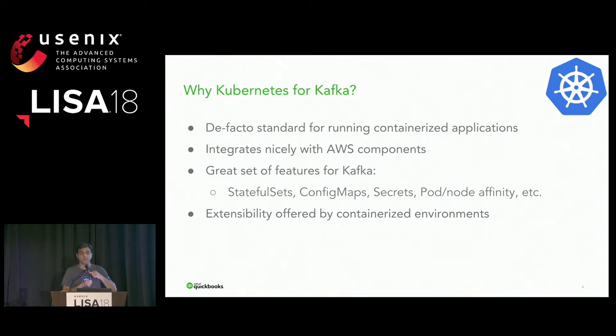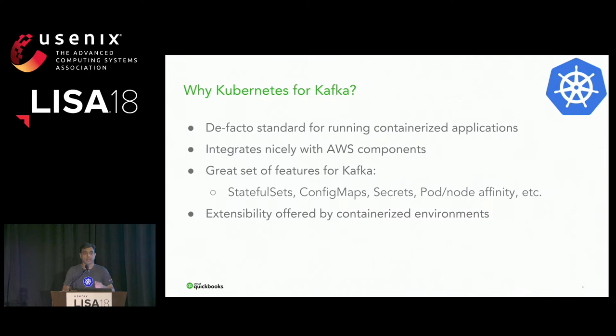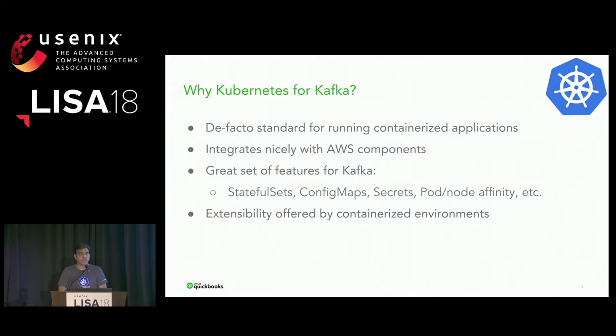Config maps — Kafka comes with a big detailed configuration file, and you want all the multiple pods running Kafka brokers to access the same config information. You create your config file as a config map in Kubernetes and tell it to mount that config map in all replicas. For secrets, we use SSL, so for SSL certificates we needed a place to store them accessible to all replicas in the stateful set — Kubernetes secrets were great for that.